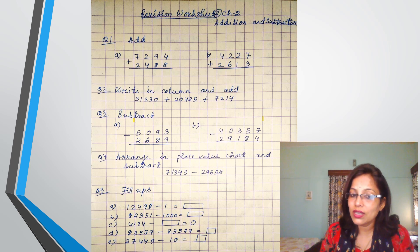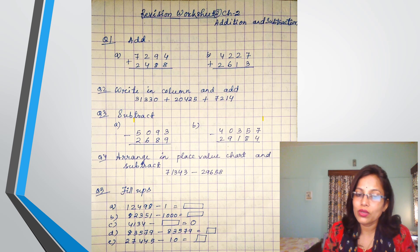The next is 27,445 minus 10. So you are subtracting 10, so go to the 10s place. In the 10s place, what is there? 4 is there. So subtract 1 from 4 and the rest of the digits you write as it is. 2, 7, 4, then 4 minus 1, right, then 5. So this will be your answer.